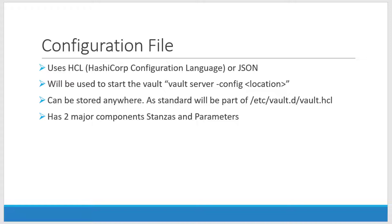All that will be provided using the configuration file. The configuration file can be written in either of two formats: HCL, which is HashiCorp Configuration Language, or JSON. HCL is very easy to understand and all the tools within HashiCorp will be using HCL.